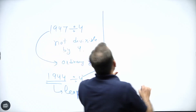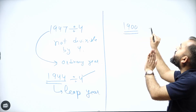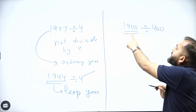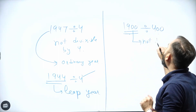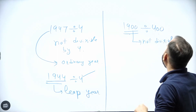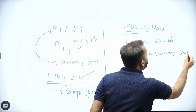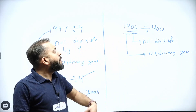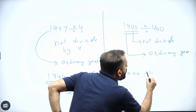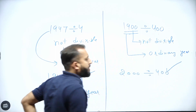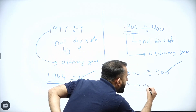In the case of a century year, for example 1900, we divide by 400. Is 1900 divisible by 400? No — hence it is an ordinary year. Now let's take the century year 2000. Is 2000 divisible by 400? Yes — 2000 is completely divisible by 400, and that is why 2000 is a leap year.